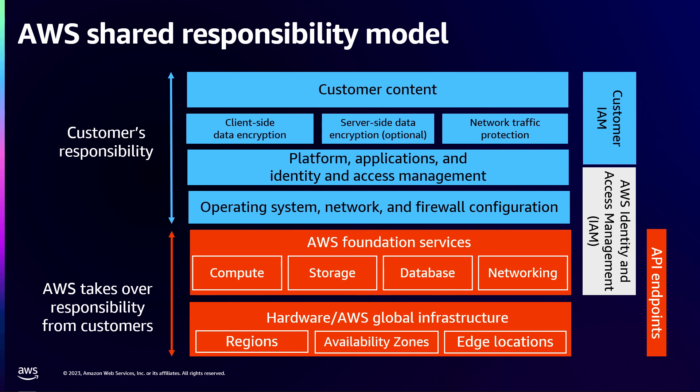A classic example is with EC2 services, where Amazon will take over the responsibility of managing the physical infrastructure. We'll help operate these things with an SLA so that you can get operational capabilities in the cloud without you having to provision anything to do with the region. The orange section is all the stuff that we look after, and the blue stuff is all you.